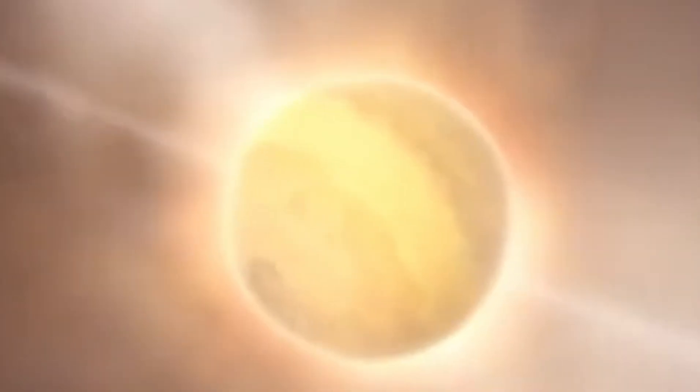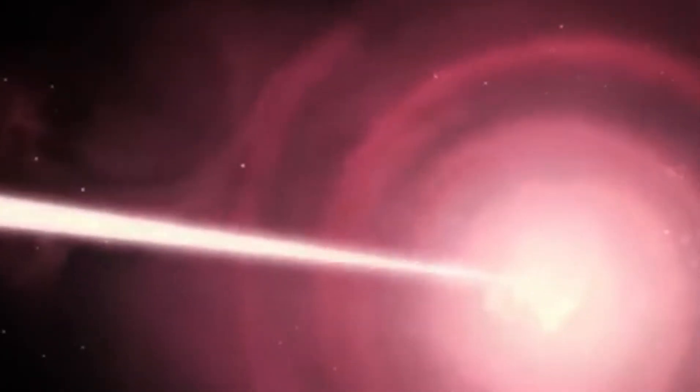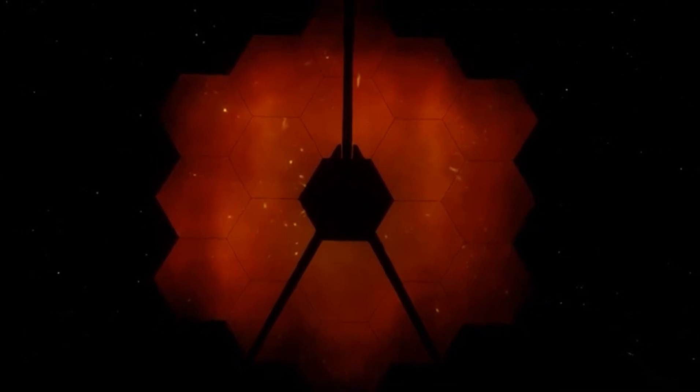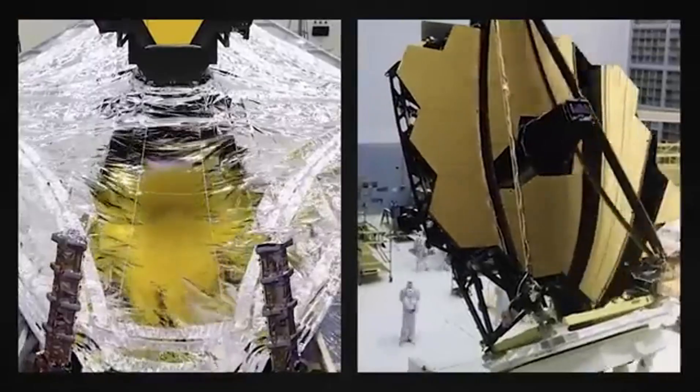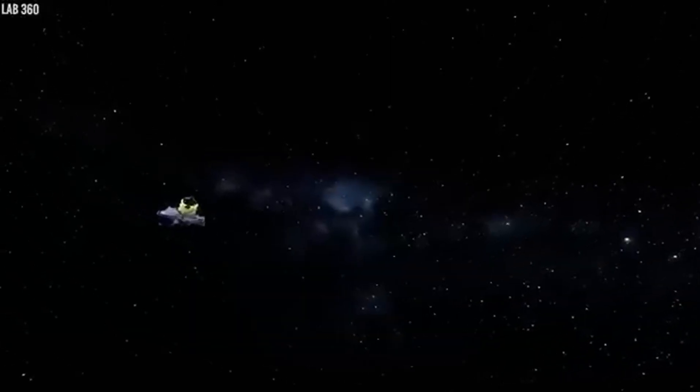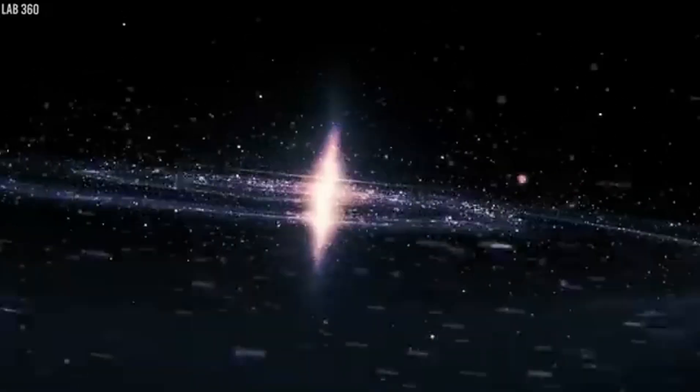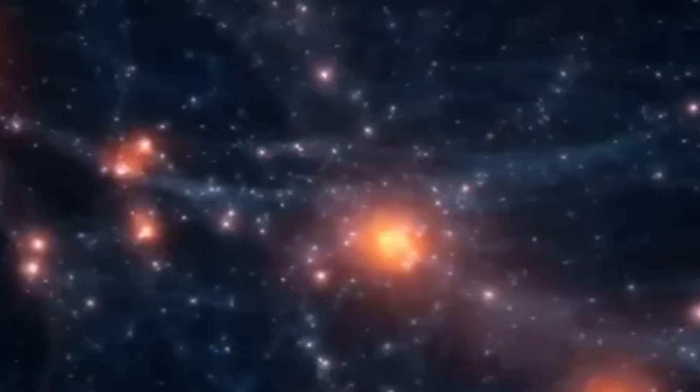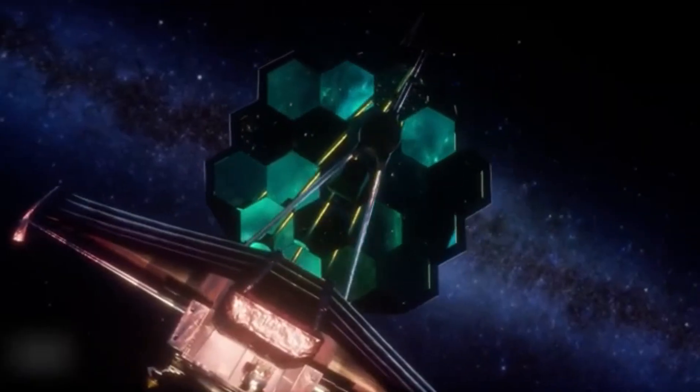The James Webb Space Telescope possesses a remarkable ability to gaze deep into the universe, a feat that essentially lets it peer back in time. The farther an object is from us, the longer its light takes to reach our telescopes. Consequently, when JWST focuses its lenses on a distant galaxy, it isn't merely capturing a snapshot of the present. Instead, it's like a cosmic time machine, revealing what that galaxy looked like billions of years ago when its light embarked on its interstellar voyage. This unique capability allows scientists to delve into the ancient history of our universe, a time when the first stars and galaxies were taking shape, providing an invaluable opportunity to study the processes that sculpted the universe we now behold.